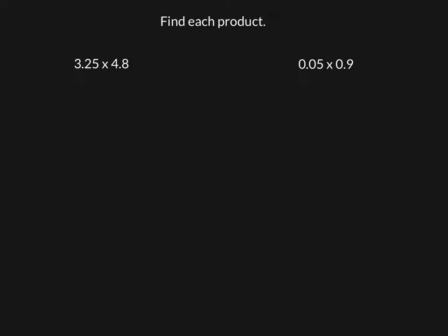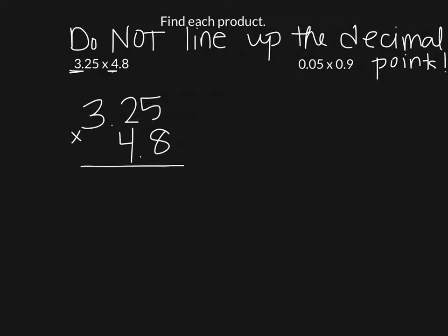Let's go to the next one. Find each product. So I just write it out like normal. We want the number that has the more digits to be on the top. It doesn't necessarily matter if it's a bigger number or smaller. In this case, it's going to be a smaller number, because 3 is smaller than 4, but it has more digits. So we want to put it on the top. 3.25 times 4.8. Do you see how we do not line up the decimal points? I get a lot of students that want to line up decimal points. Then they're adding zero, which makes their multiplying more complicated. So just write the numbers down as they are.